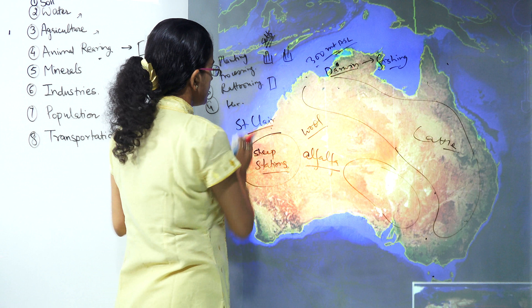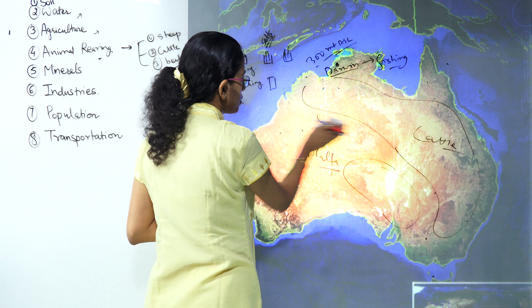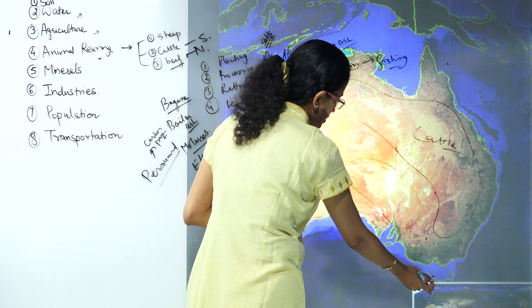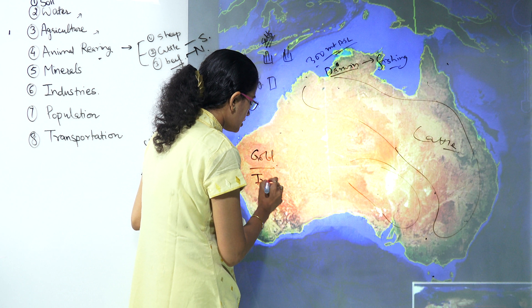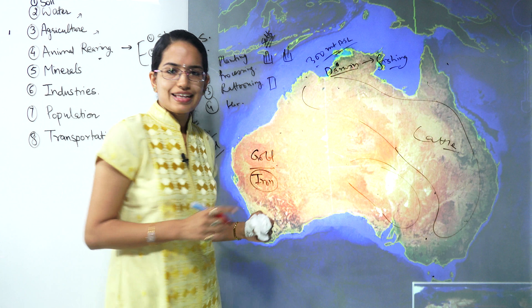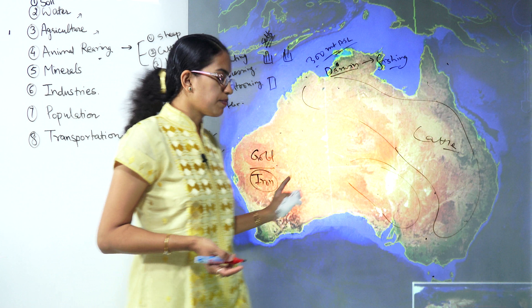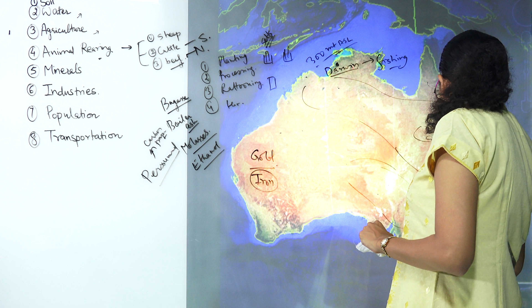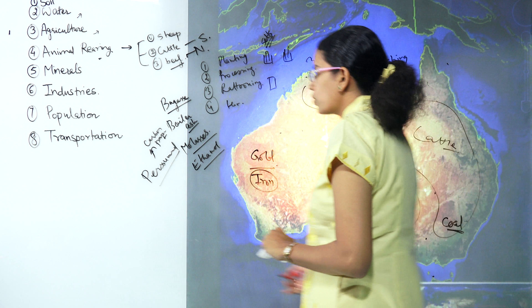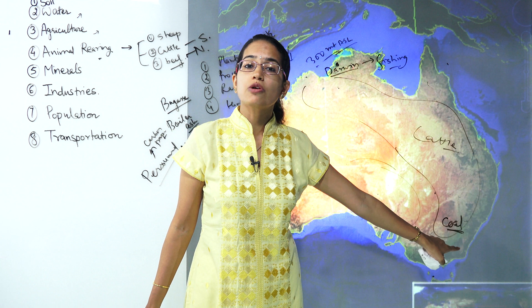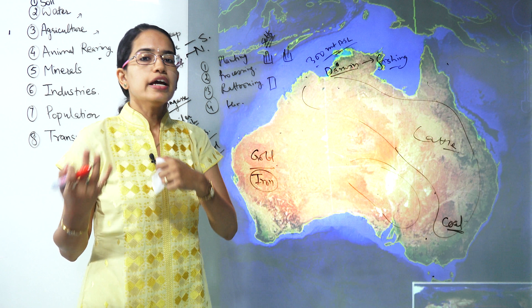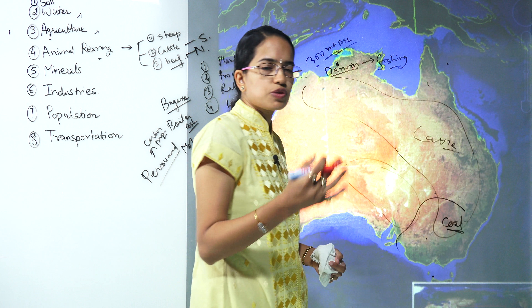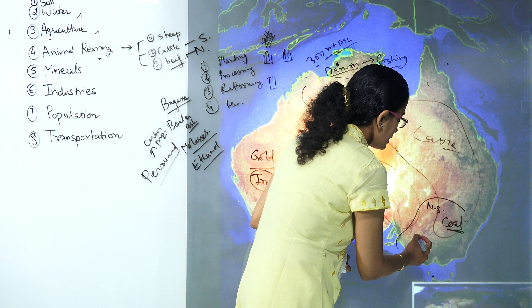Coming on to minerals - again very important. The first is gold deposits. Gold is found mainly in Western Australia and parts of Tasmania. In Western Australia you also find a lot of iron and zinc. If we talk about the region of New South Wales, where you have abundant water supply, you also have coal deposits. Since you have coal deposits here, this is a prominent position for industries because industries require electricity, and therefore industries would be located mainly in New South Wales and Victoria.